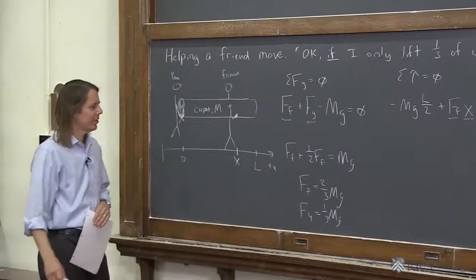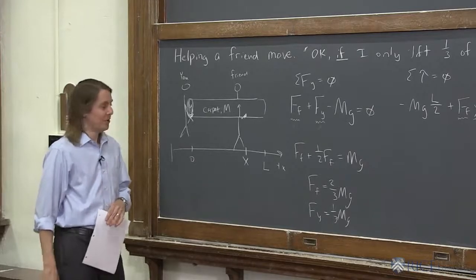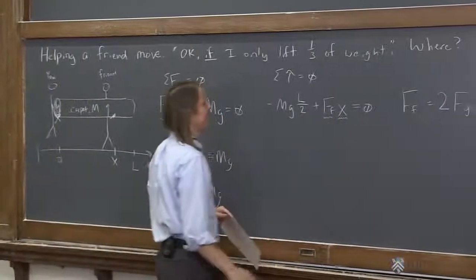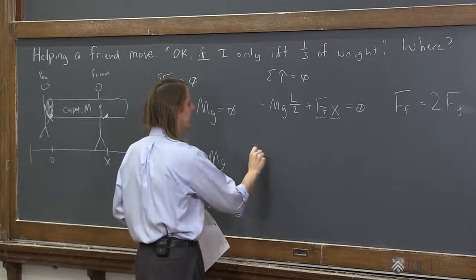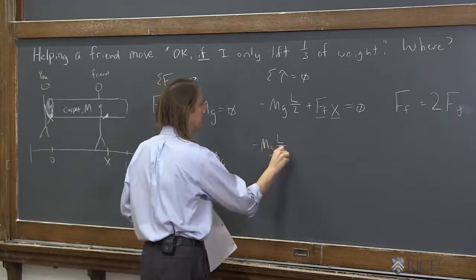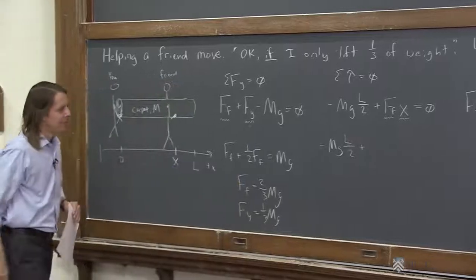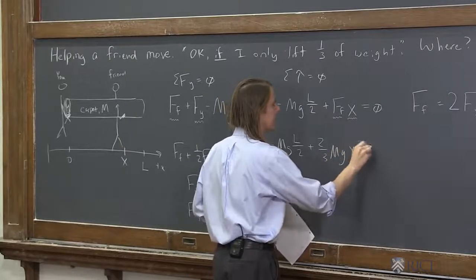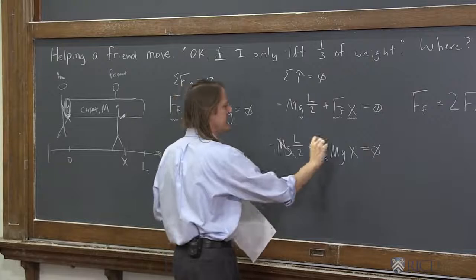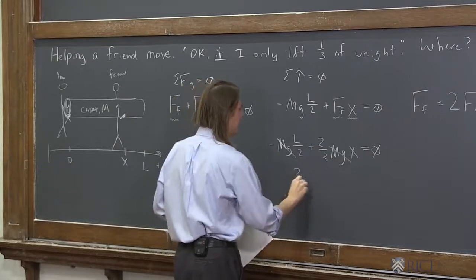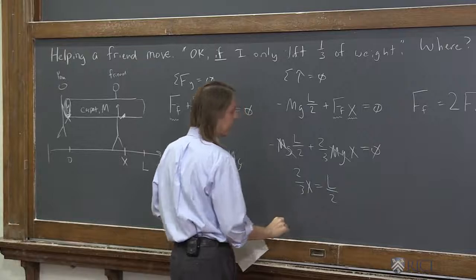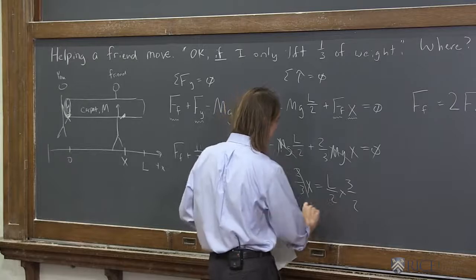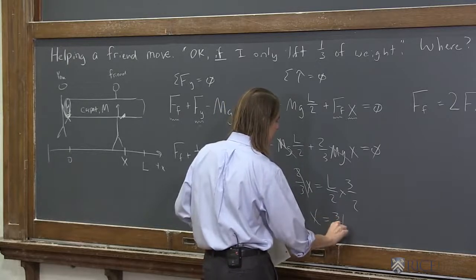Yes, that is correct. This is the requirement, is that I carry one third, he carries two thirds. What we want is x. Now I'm with us. So minus mg L over 2 plus, and now let's write F friend in terms of mg, so it's two thirds mg. Plus two thirds mg at x equals zero. So now we just cancel the mgs. And we bring that over and get two thirds x equals L over 2. So times three halves. And we get that x equals three fourths L.